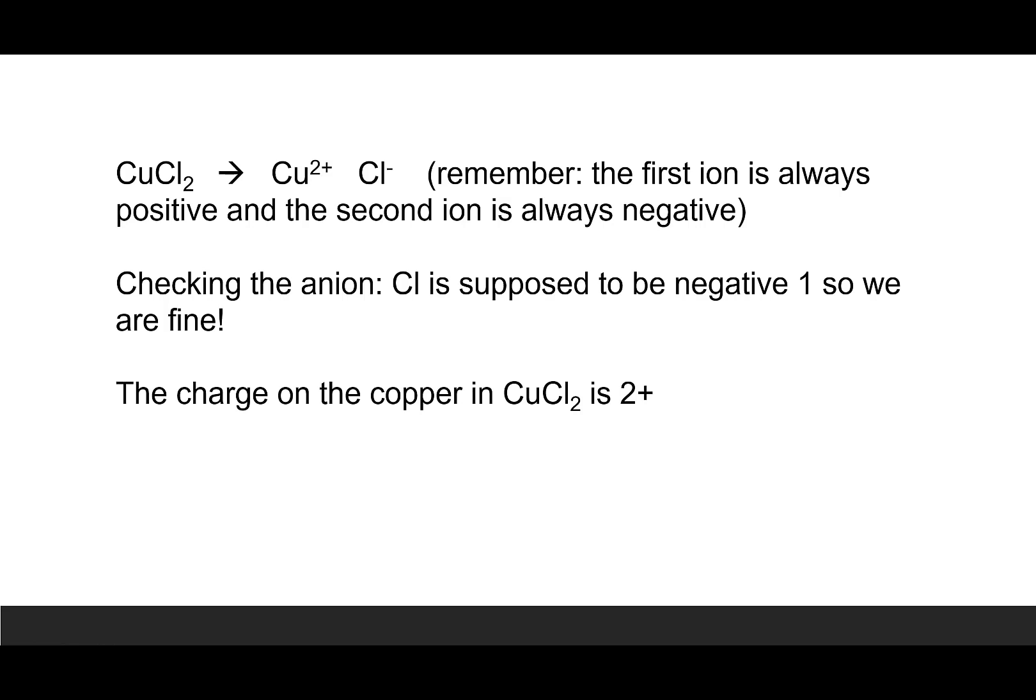If you're given the formula CuCl2 and you're interested in knowing the charge on the copper, we're going to do the reverse crossover method. There's one copper ion and two chlorine ions. Doing the opposite of the crossover method, the two becomes the charge on the copper and the one becomes the charge on the chlorine.